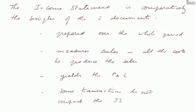The income statement is comparatively the simpler of the two documents. Remember, it is prepared over a whole period — the whole accounting period. It can be prepared over any period of time, T1 up to T2. It measures sales and all the costs to produce the sales, and it yields the profit or loss. We must understand that some transactions do not impact the income statement. In other words, the income statement is only a document recording profit generation — sales minus cost.